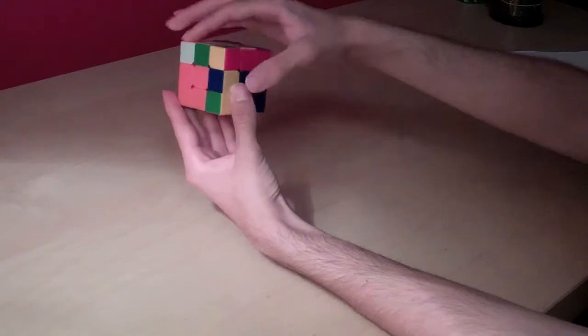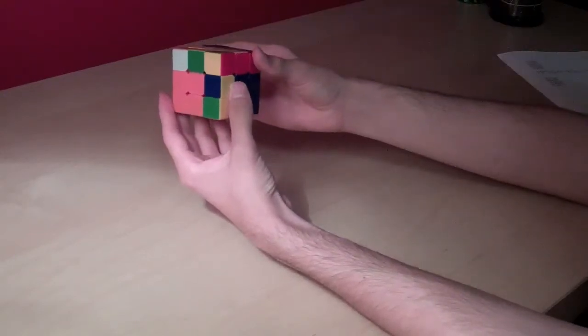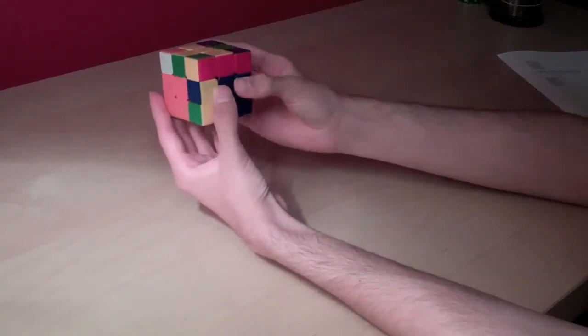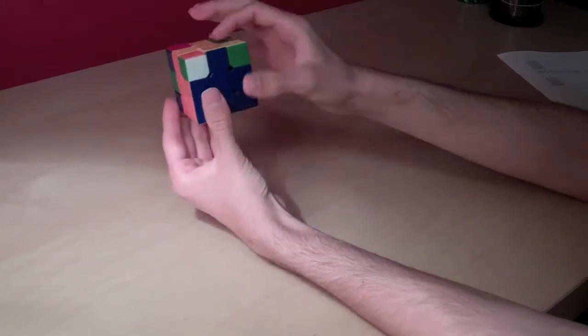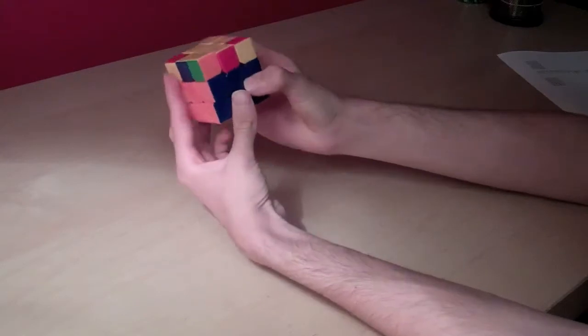Now, I'm on my last F2L pair. And what I think I'm going to do is I'm going to move them out of the way, bring that down, then get them opposite one another, and then sink them in like that.